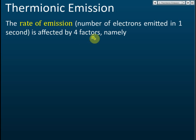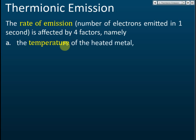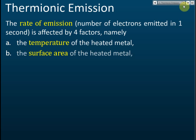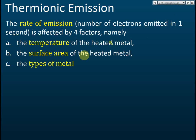The rate of emission is affected by four factors. The first one is temperature. If the temperature is very high, more electrons will be released in one second. The second one is the surface area of the heated metal — a bigger area will release more electrons.